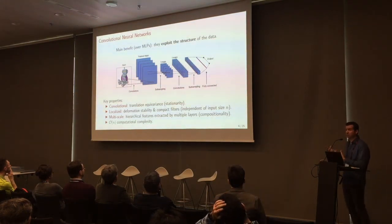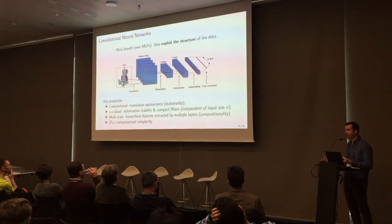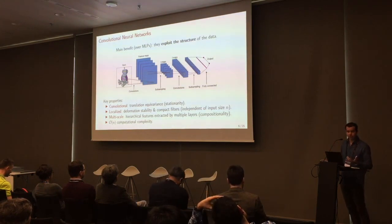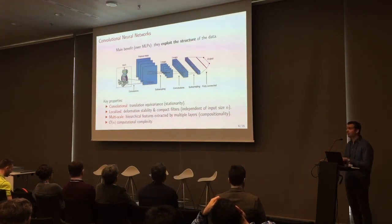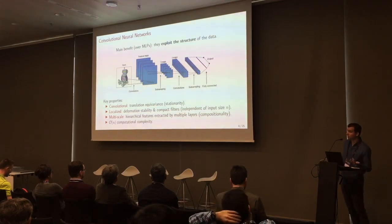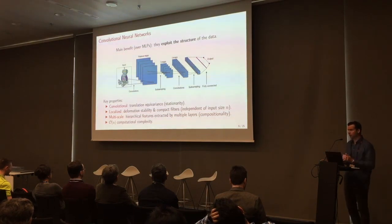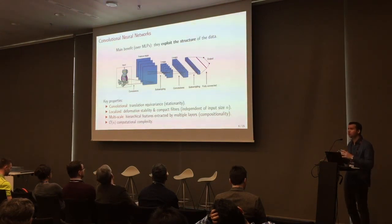What we like about convolutional networks is, first, that they are convolutional — we do the same processing everywhere. On the network, for every node, we apply the same process. On the social network example, the function deciding whether to give a loan will be the same function everywhere, depending only on features from nearby connections. Another key property is that it's localized: I don't need to look at the whole network to predict something about a node — just the node and maybe one or two hops away.